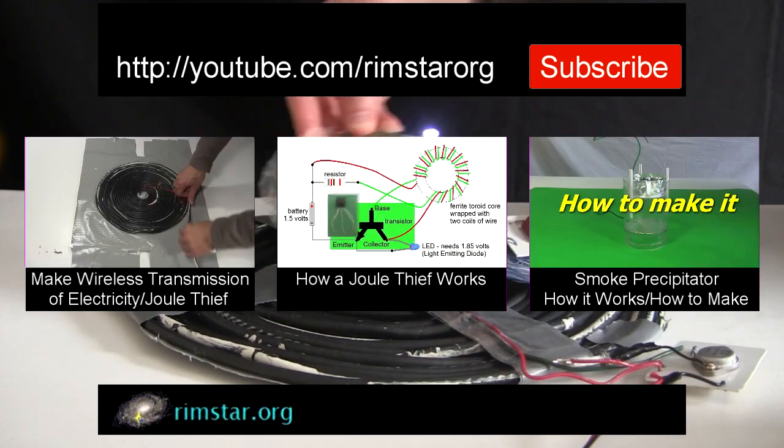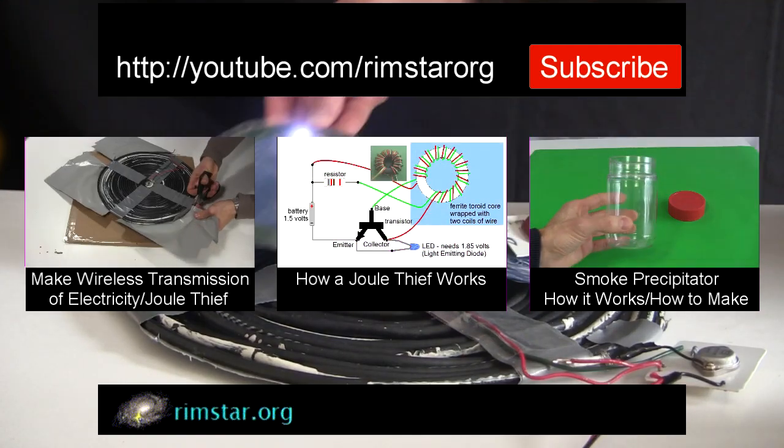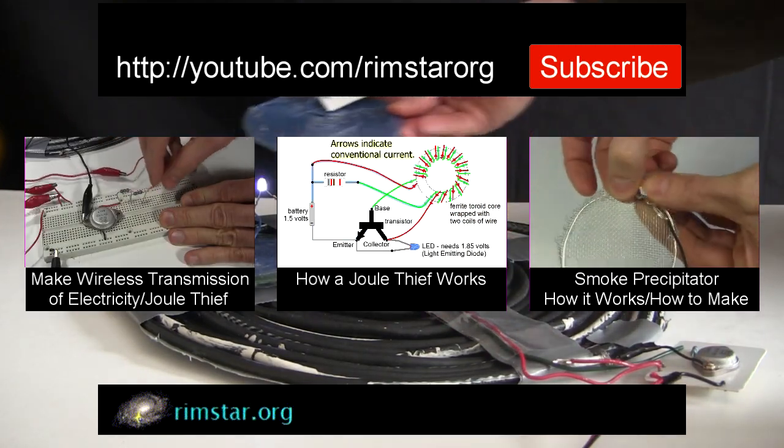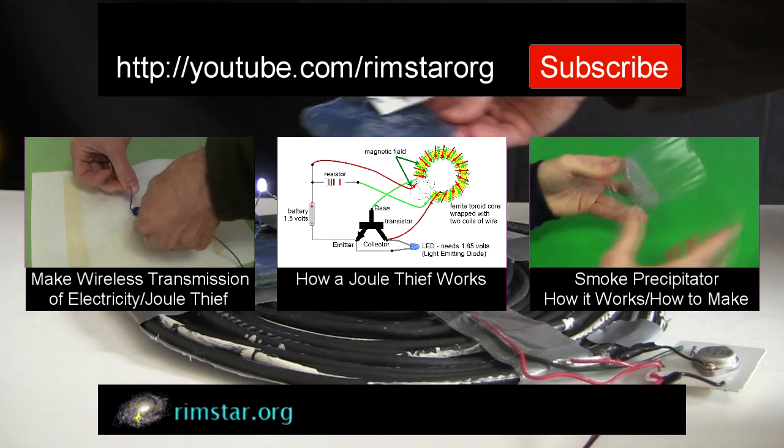That includes one showing how to make this electricity transmission stuff, another explaining how the Jewel Thief circuit works, and for variety, one on a smoke precipitator that cleans up smoke particles using electricity.